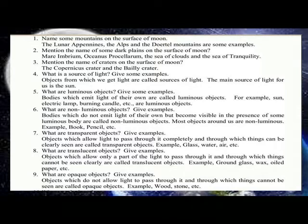What are non-luminous objects? Give examples. Objects which allow light to pass through it completely and through which things can be clearly seen are called transparent objects. Example: glass, water, air, etc. What are transparent objects?